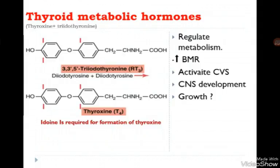The general effects of thyroid metabolic hormones: in general, they regulate our metabolism, increase our basal rate of metabolism, and have a very important role in thermoregulation. They also activate many organ systems like the cardiovascular system and respiratory system, and contribute to central nervous system development as well as musculoskeletal development, which results in the growth process.